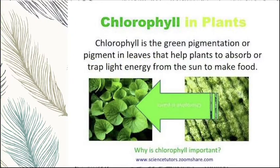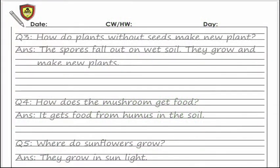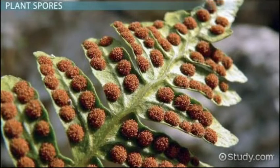Students, let's rewrite and trace it and learn it. Now question number three: how do plants without seeds make new plants? If you don't know the answer, you can open your book and find out the answer using your comprehension skills. There's a hint in this picture.